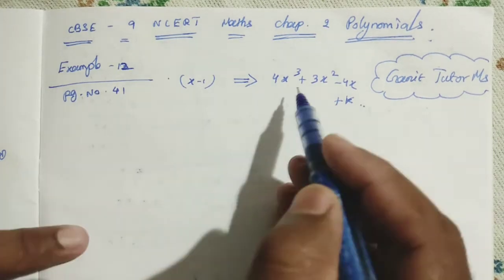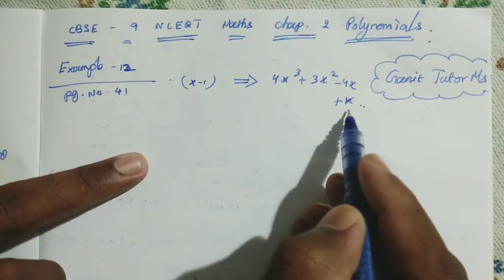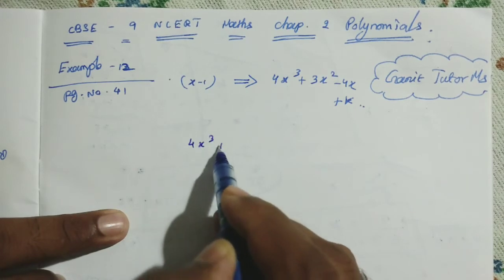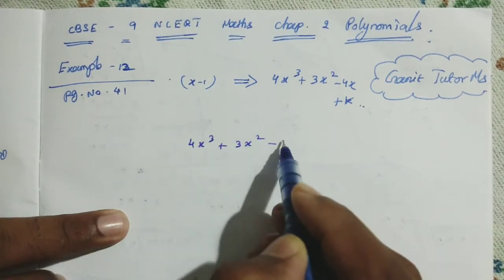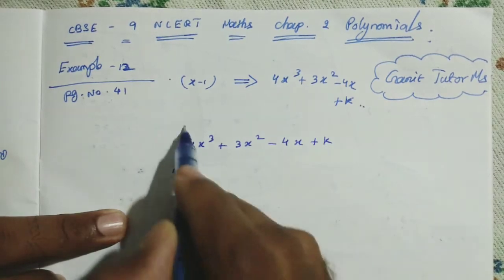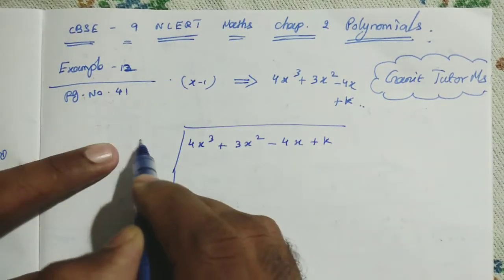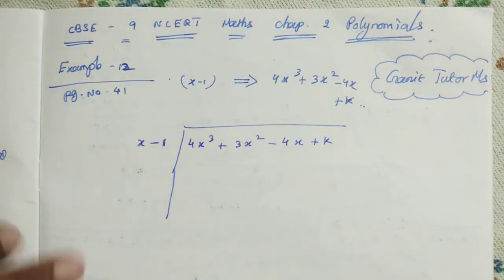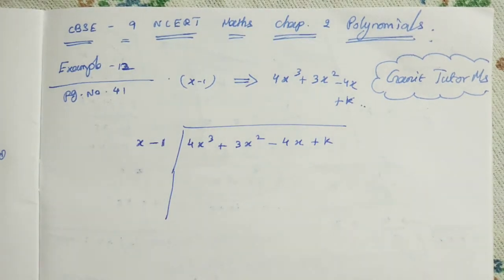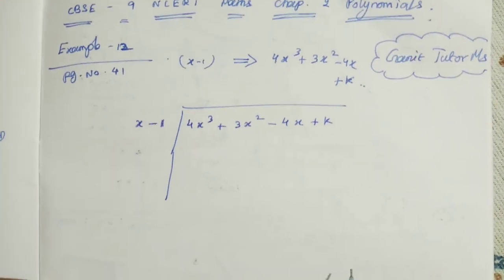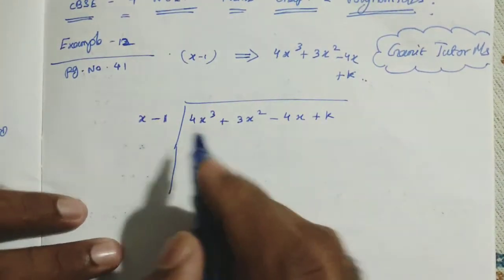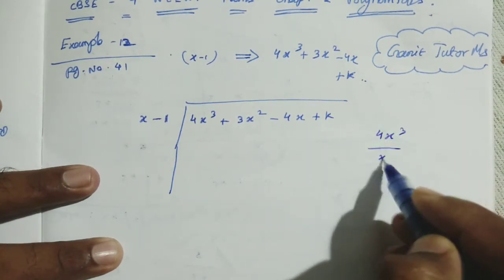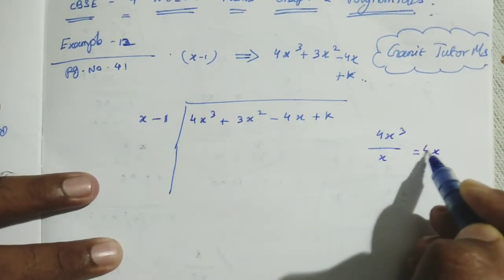Now this is a very easy one — the same thing you should do. We can divide 4x cubed plus 3x squared minus 4x plus k by x minus 1. When we divide, we get a remainder of 0. First term: 4x cubed divided by x gives 4x squared.